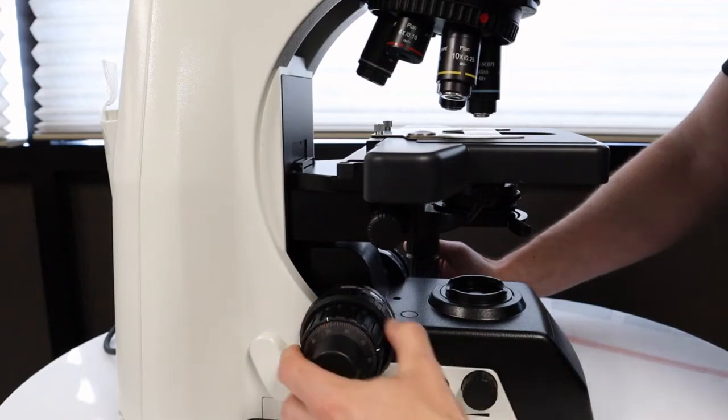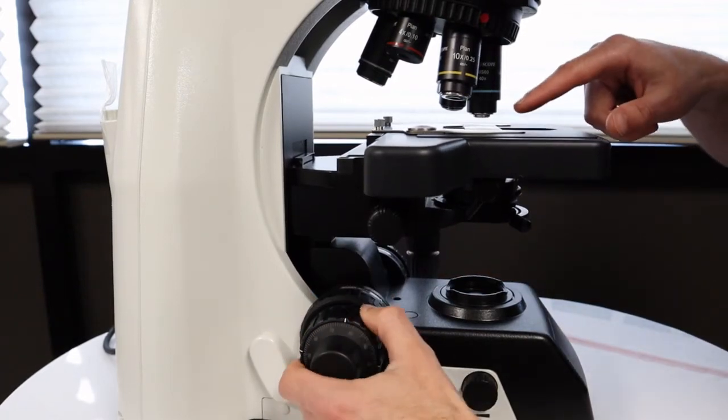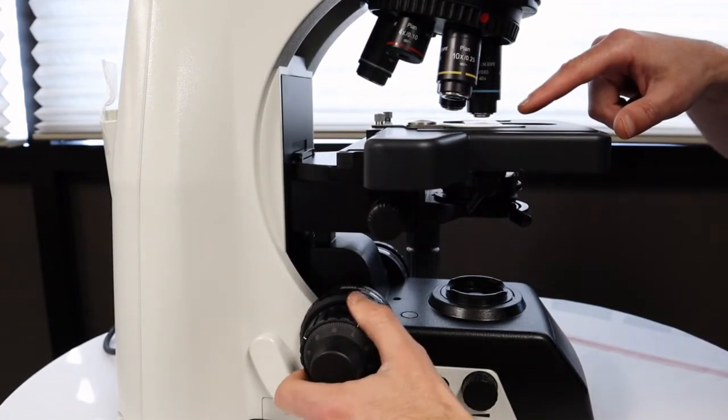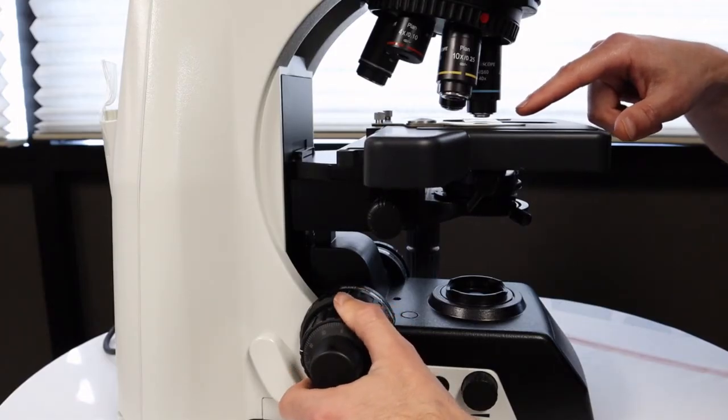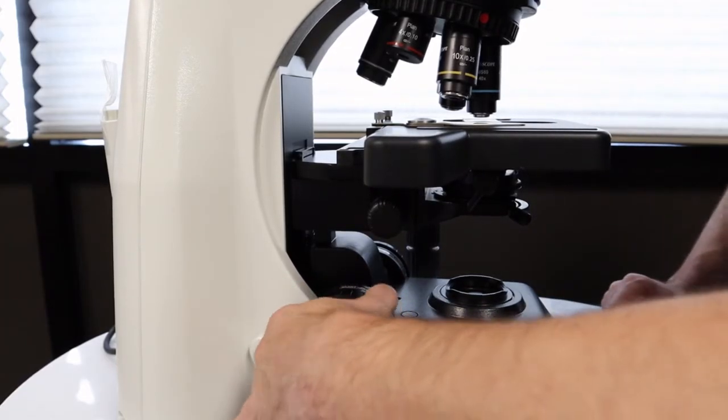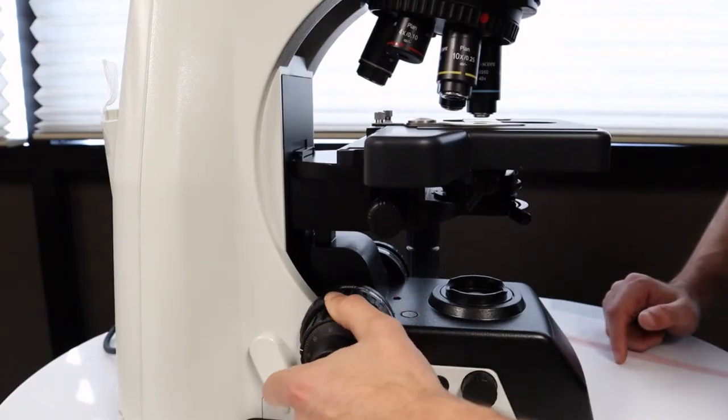This will allow me now to move the slide higher, getting it closer to the 40x objective. And then to set it, you turn the knob, locking it. Now it will go up and it won't go past where I set the stop.